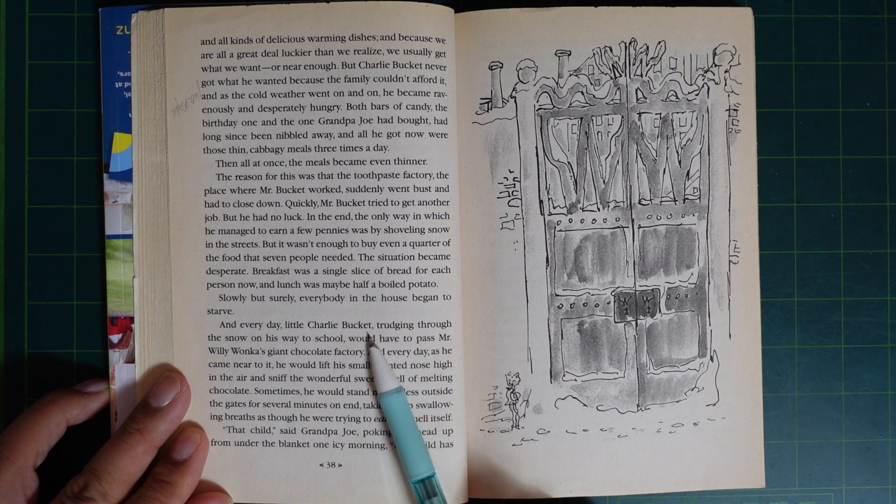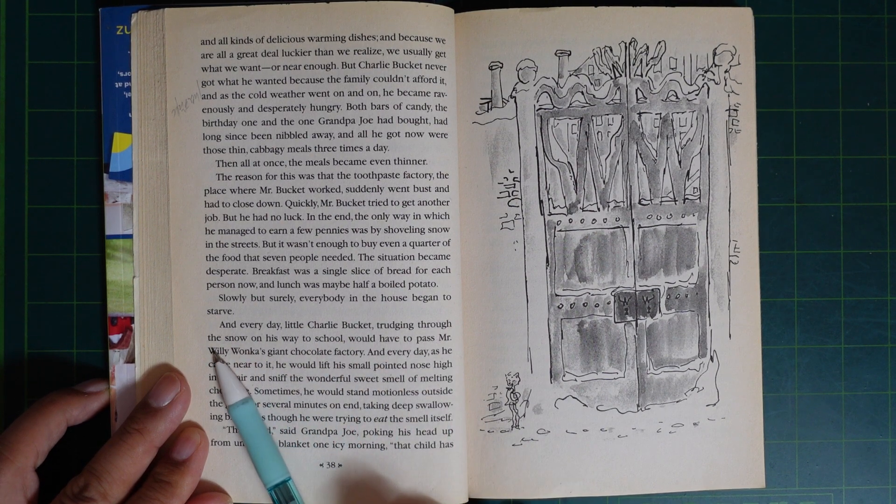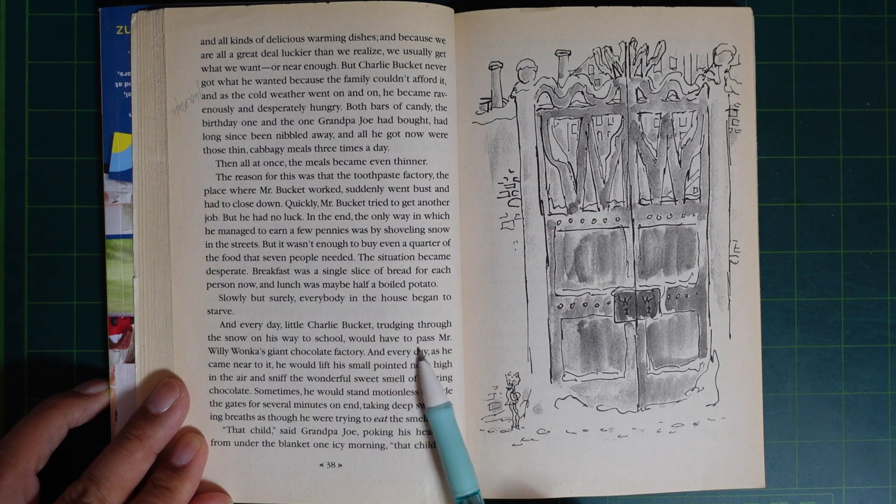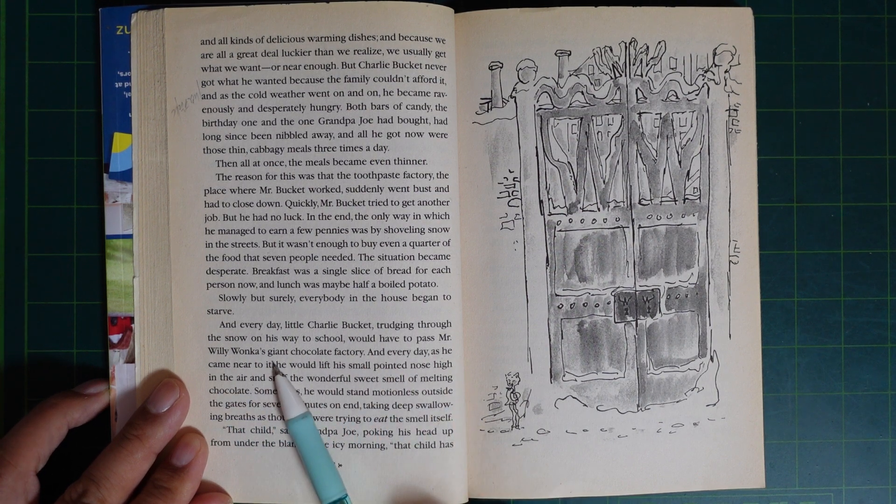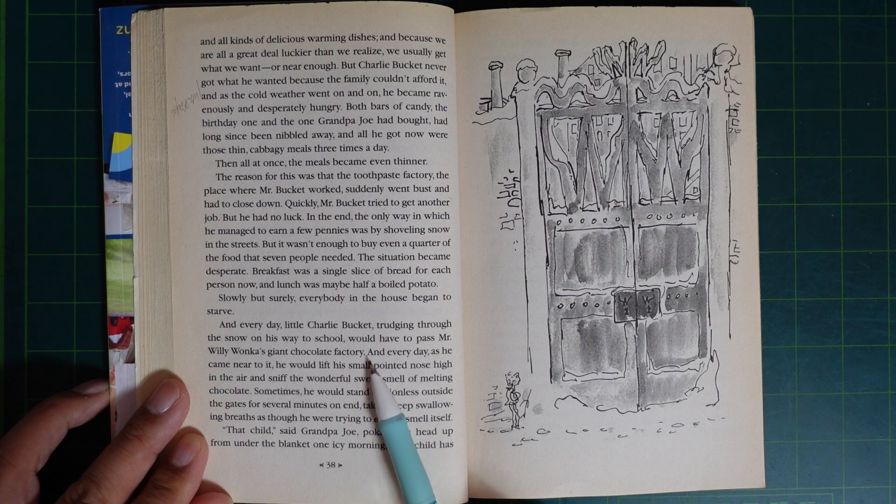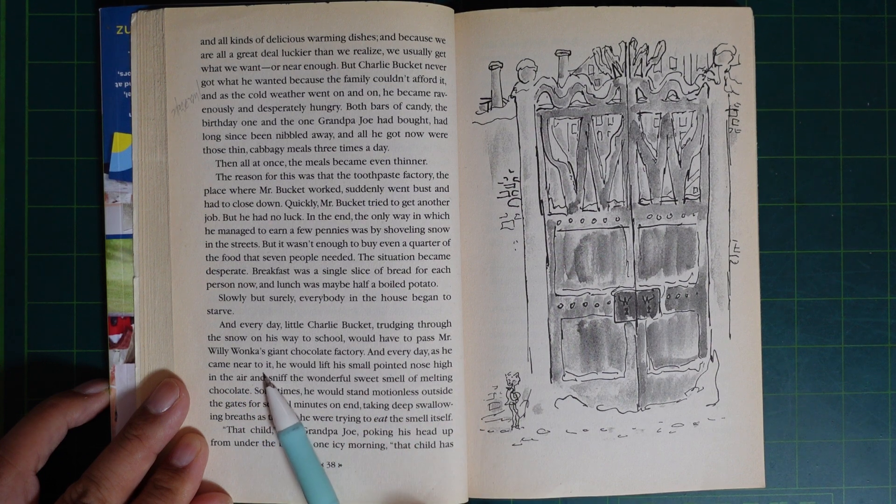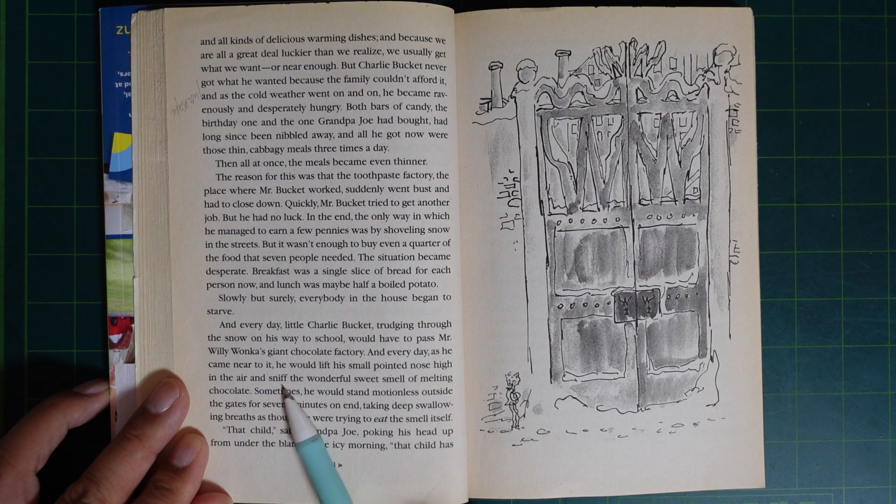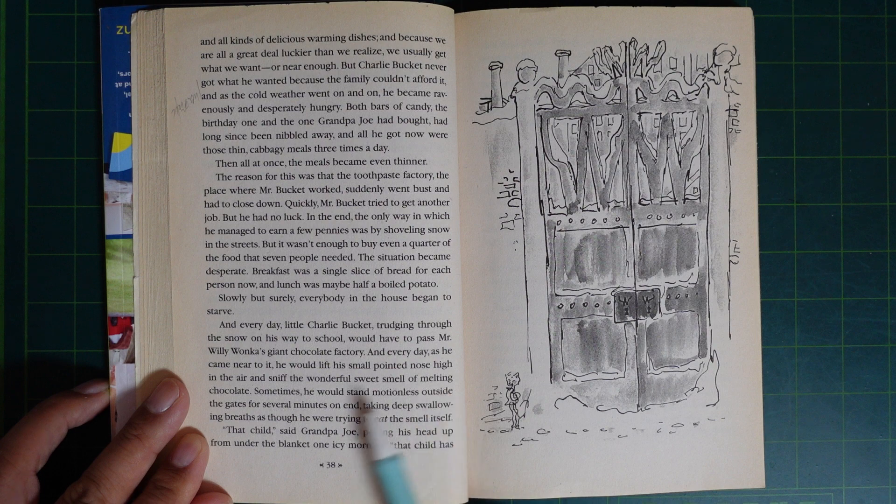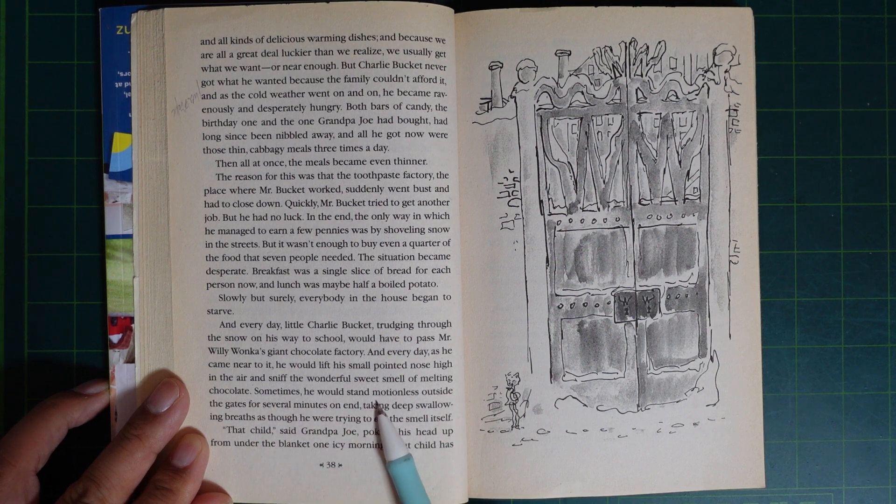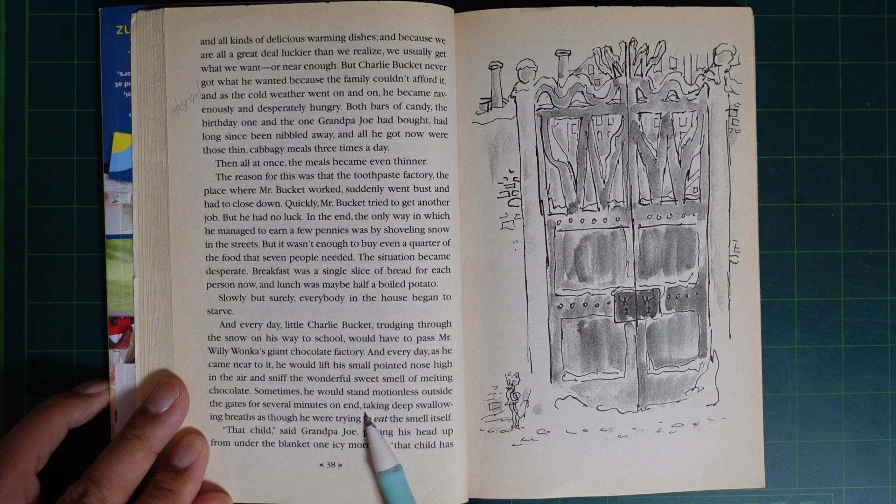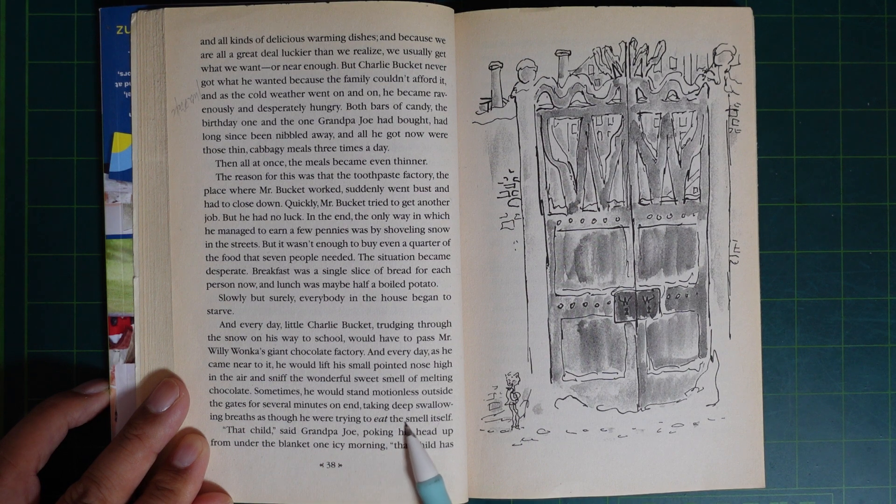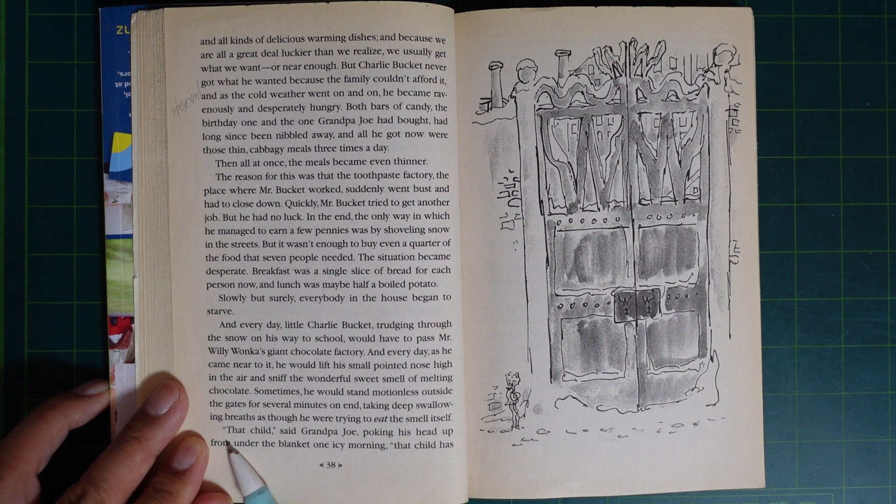And every day, little Charlie Bucket, trudging through the snow on his way to school, would have to pass Mr. Willy Wonka's giant chocolate factory. And every day, as he came nearer to it, he would lift his small pointed nose high in the air and sniff the wonderful sweet smell of melting chocolate. Sometimes, he would stand motionless outside the gates for several minutes on end, taking deep swirling breaths, as though he were trying to eat the smell itself.